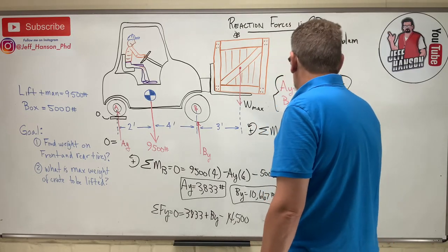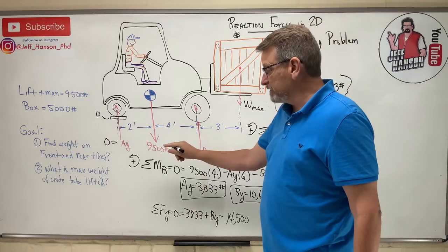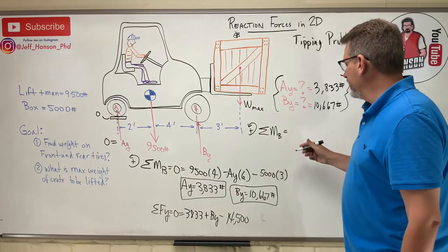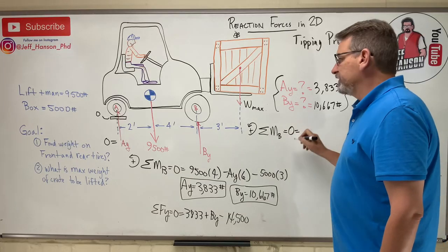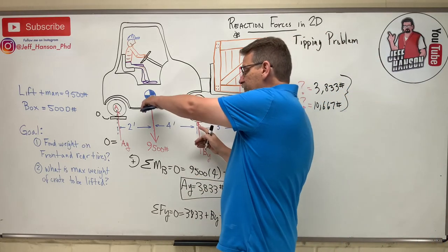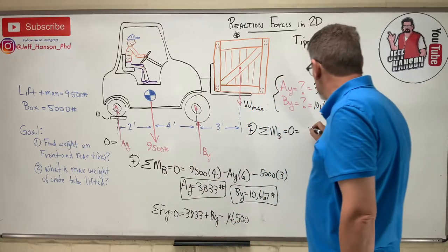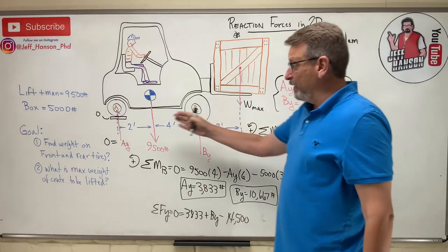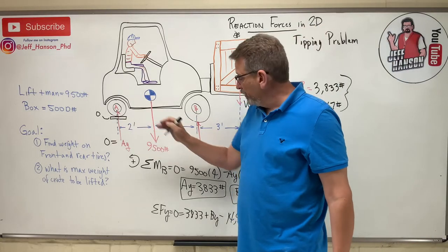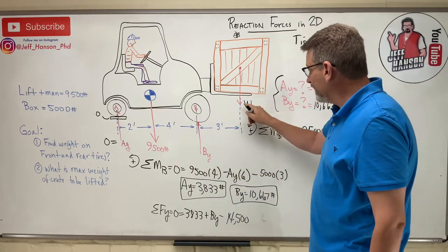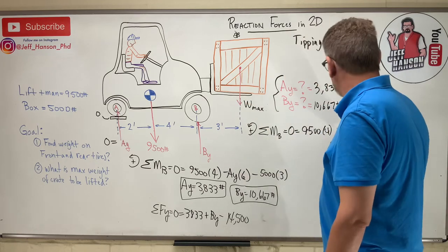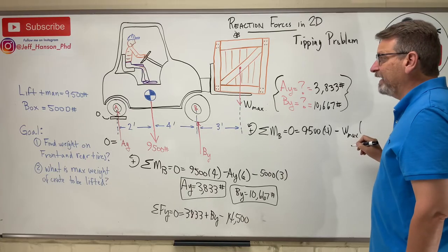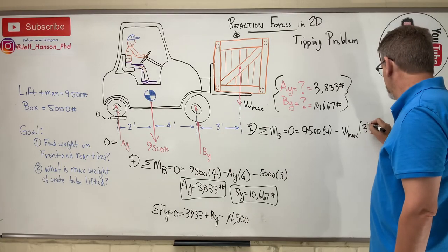Okay, and see if we can come up with the very maximum weight of the crate, right? What does the box weigh right there? Okay, here we go. So you've got 9,500 times 4 rotating you positive. Okay, and then you got Ay, but Ay is zero, so we're gonna ignore that. And then over here I have Wmax which rotates me negative, so minus Wmax times how far away? Three feet.